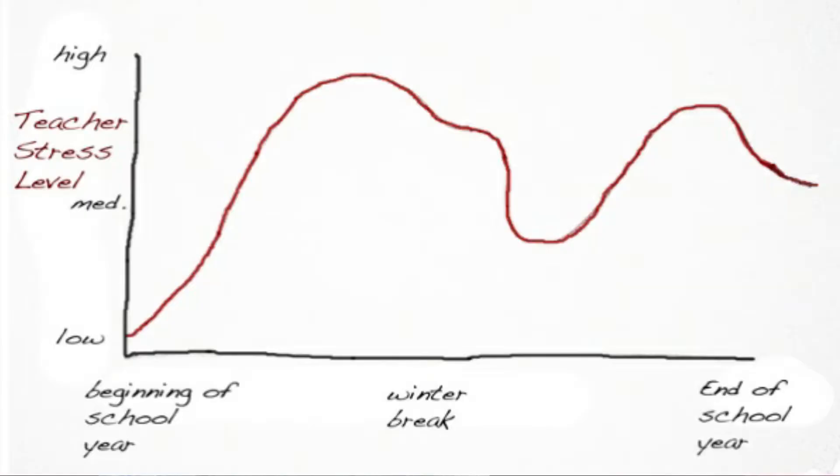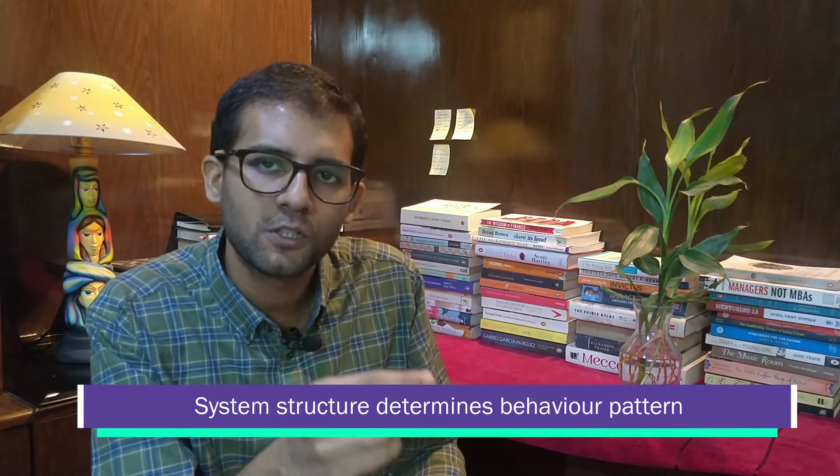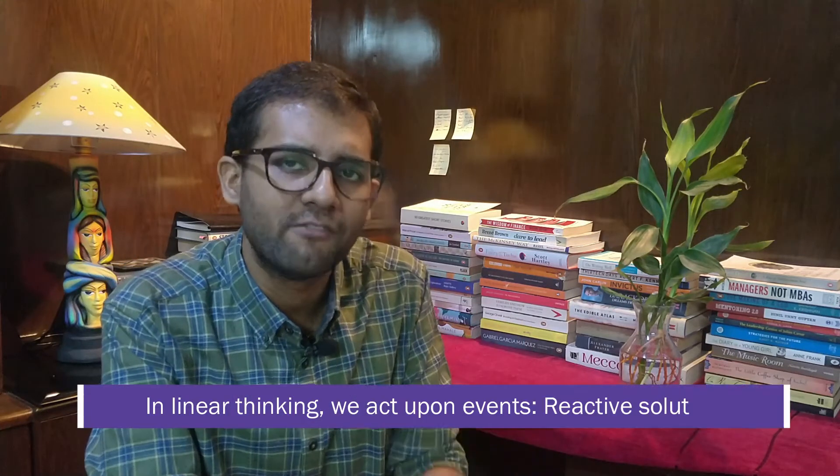Any system will have a pattern. The core belief of the systems thinking approach is that the pattern produced by the system is due to the structure of the system. Take the Borneo-cat situation: a solution was proposed, it was effective in the short term — they controlled malaria — but in the long term they created a disaster. In linear thinking, you act upon events and you are reactive. There is a certain event happening and you react to it; your solution is for that event.